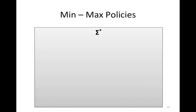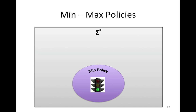We actually use two policies: a minimum policy and a maximum policy. The minimum policy describes the smallest set of strings that the function must accept and return — this is the least that the function must accept and return. For example, for a zip code minimum policy, if you have an input of type zip code, then you must accept and return a string that contains five digits. You cannot reject this string.